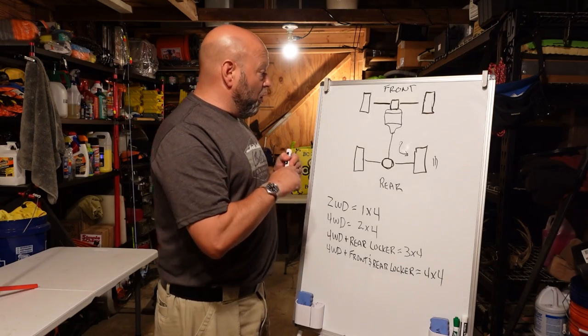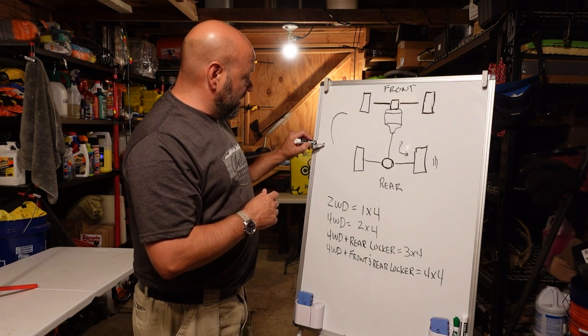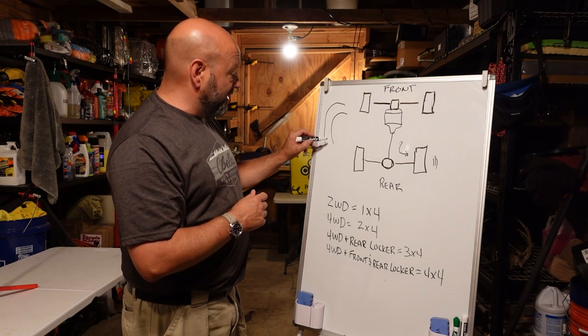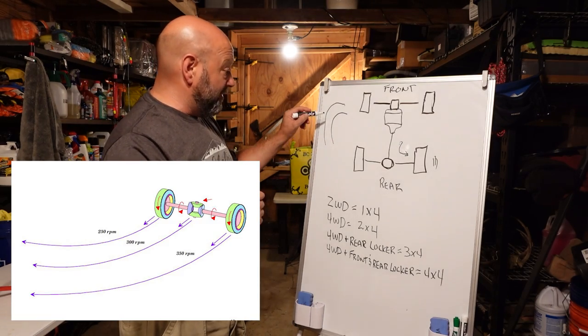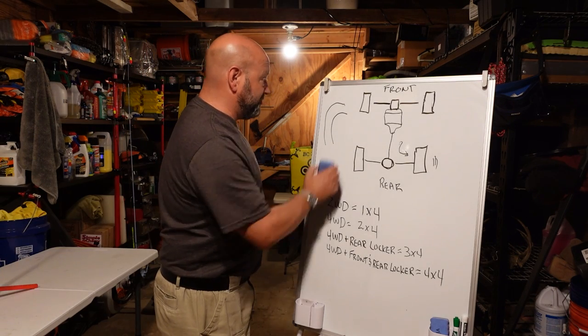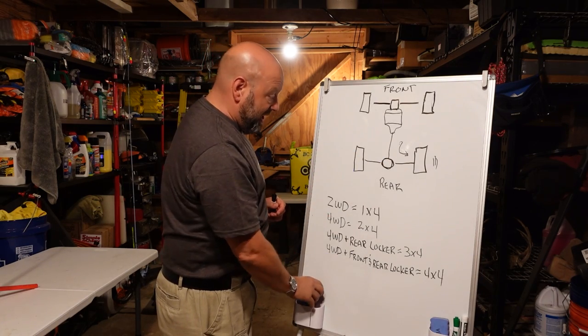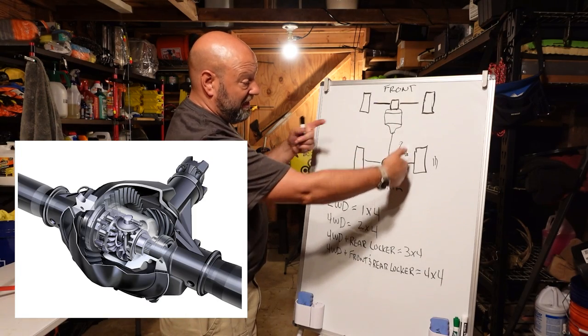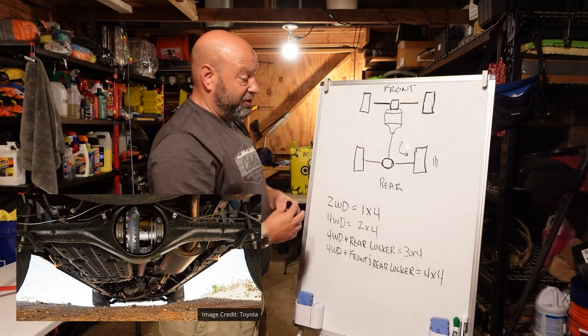You have to have that in order for your vehicle to be able to make turns. When you make a turn, this wheel has to spin a lot farther than this one does. It has to be able to spin differently from each other to make that happen or your car could not turn.